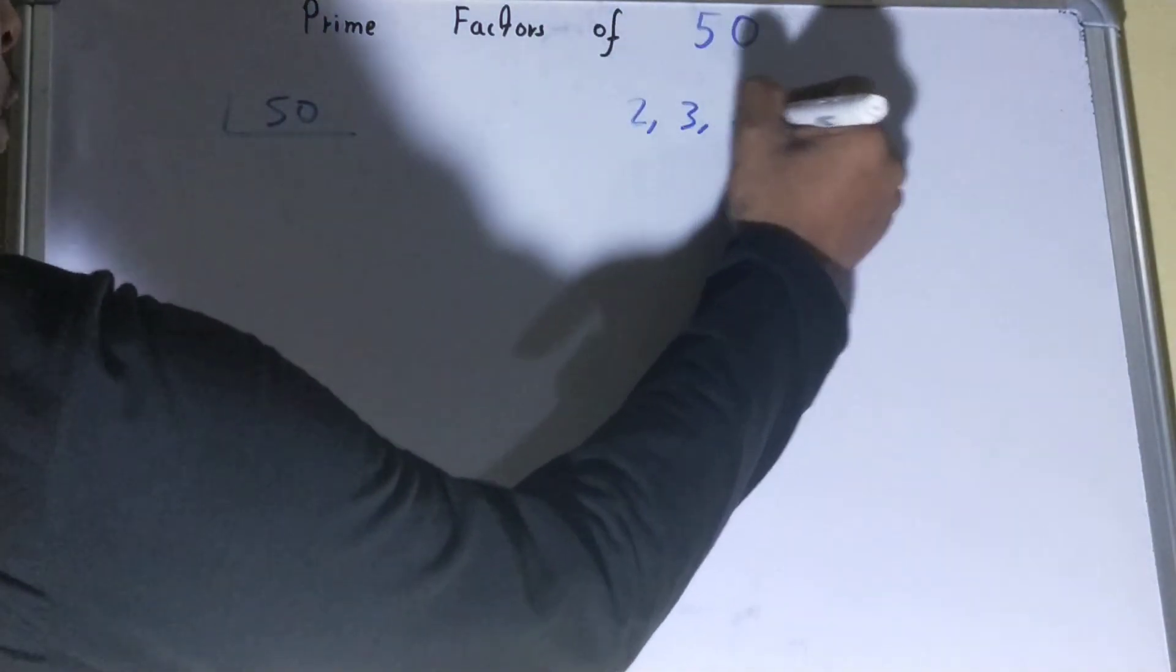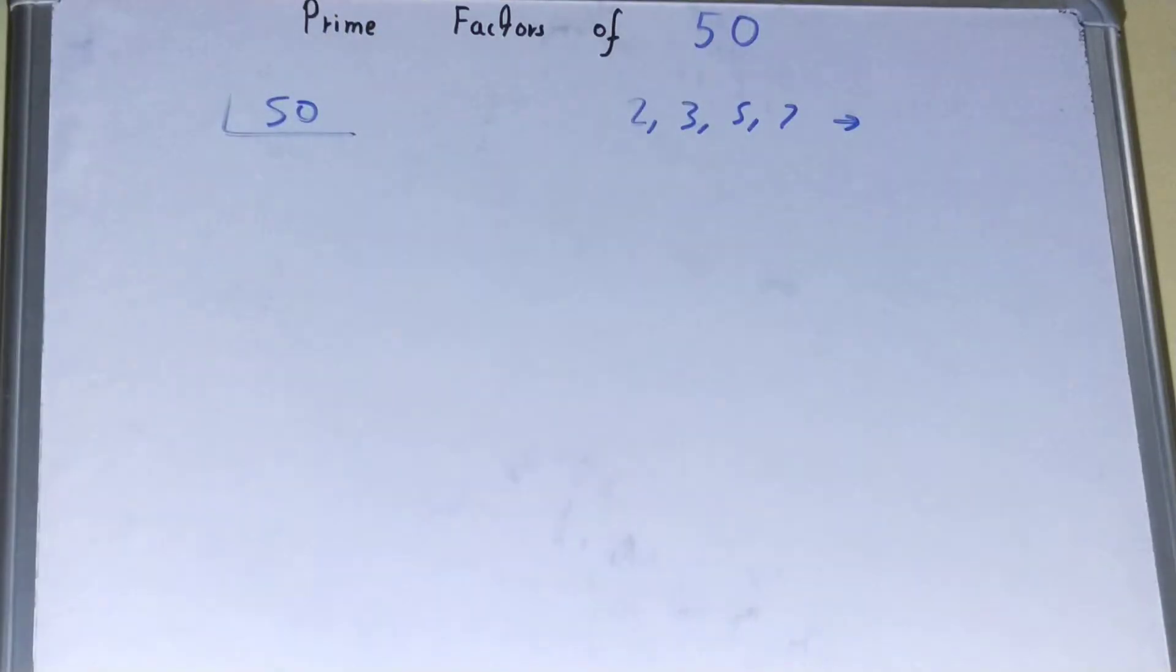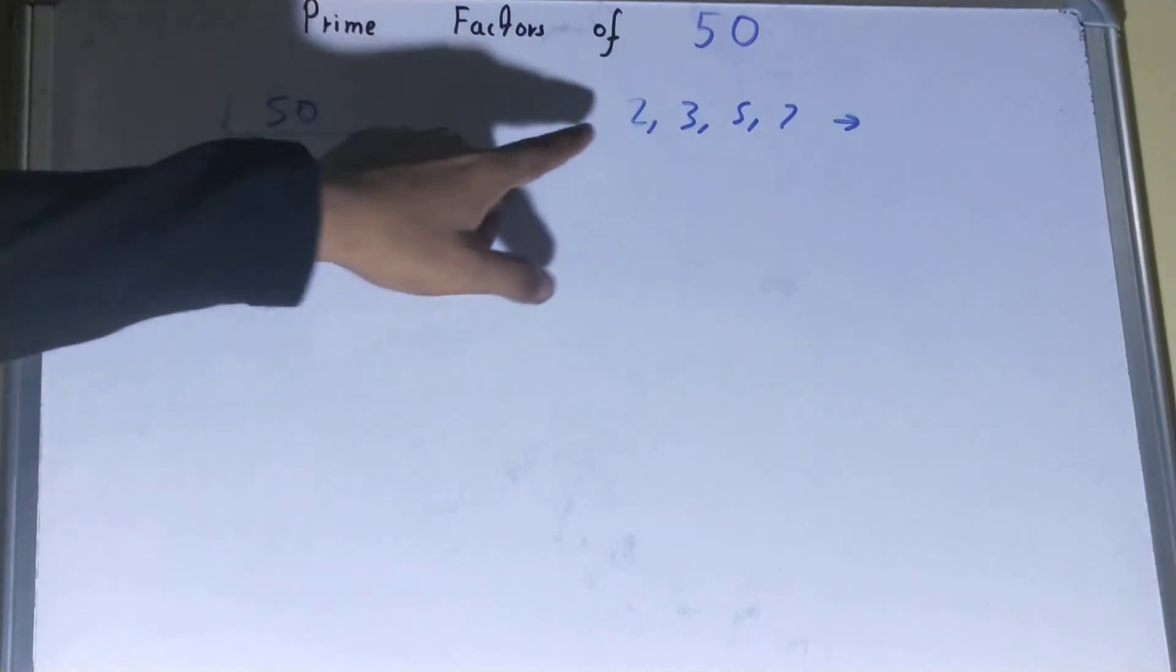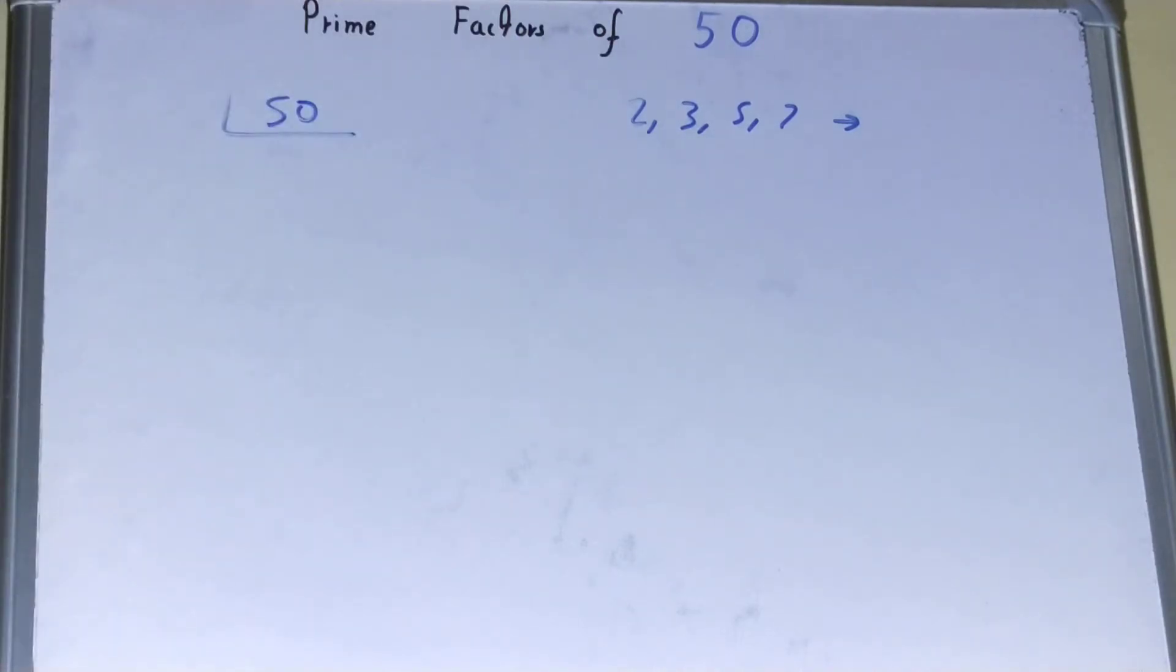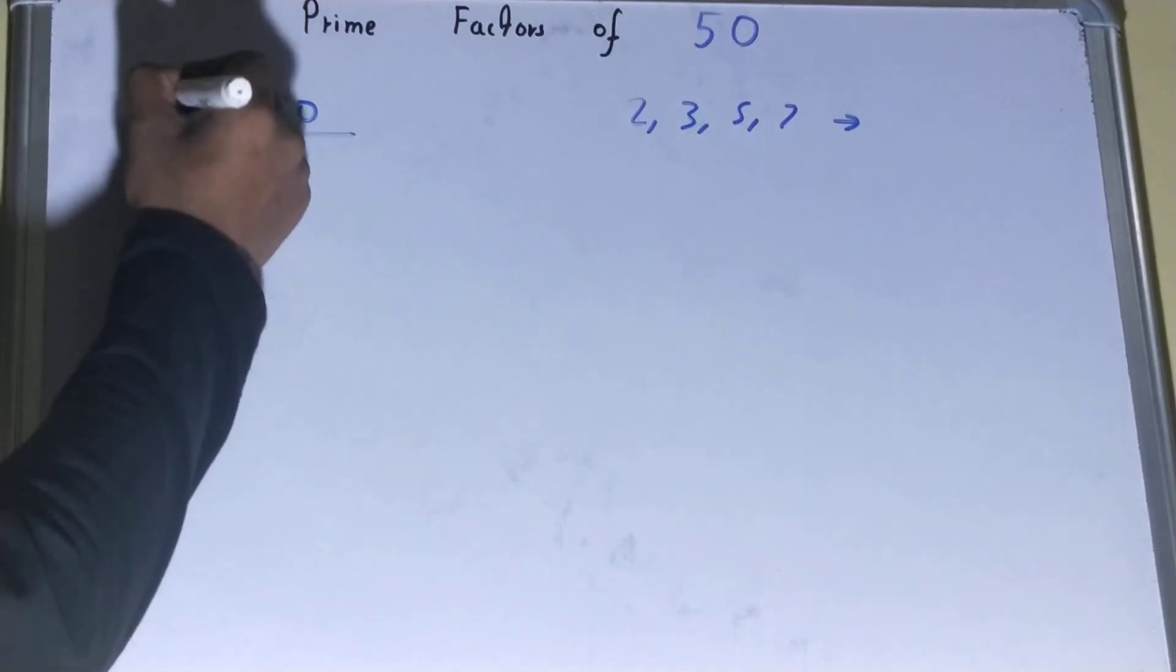We'll start with the lowest prime number, which is 2. Is 50 divisible by 2? Yes, it clearly is because 50 is an even number. So divide it and you will be left with 25.